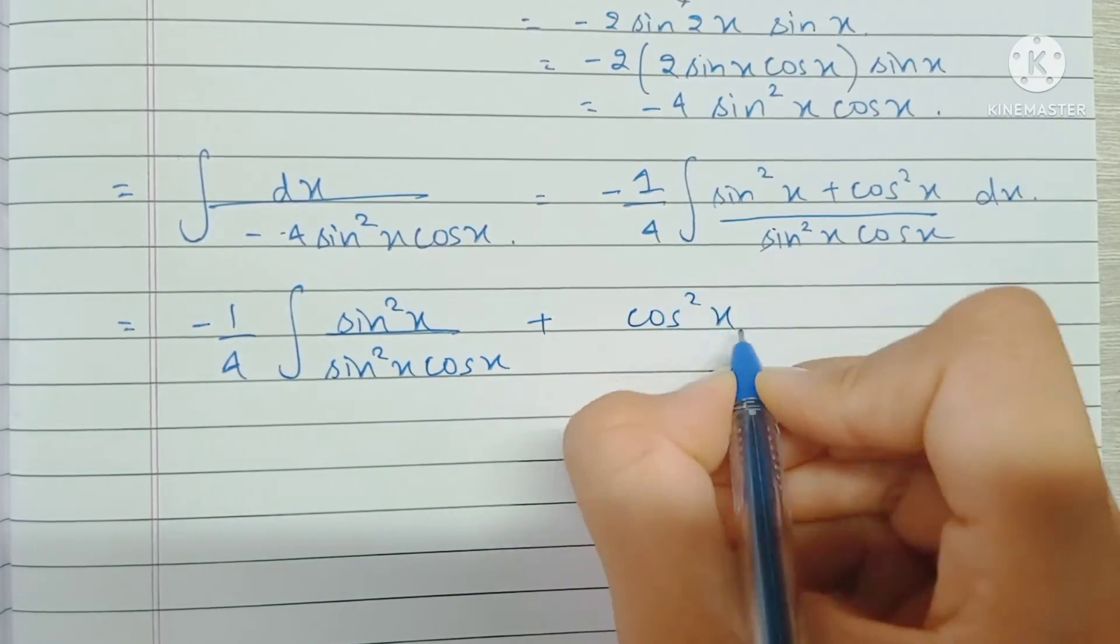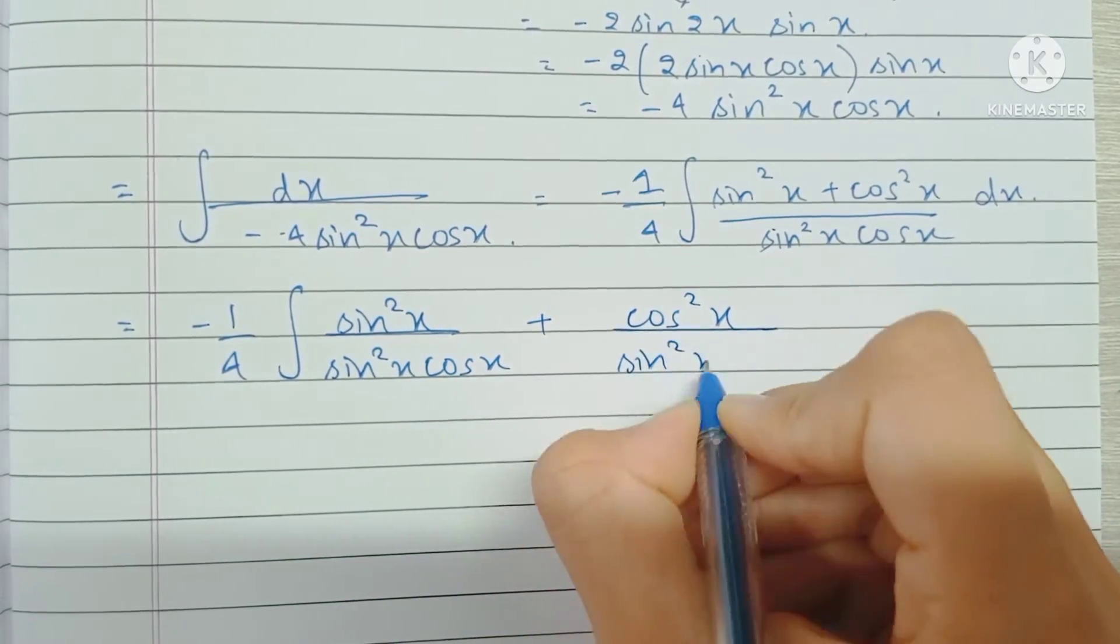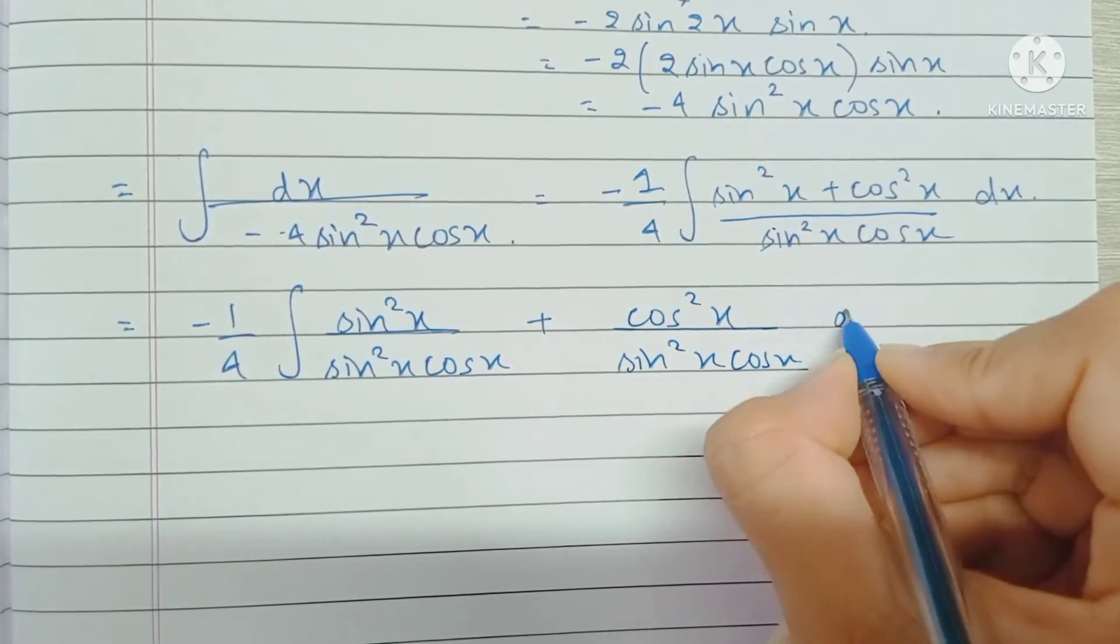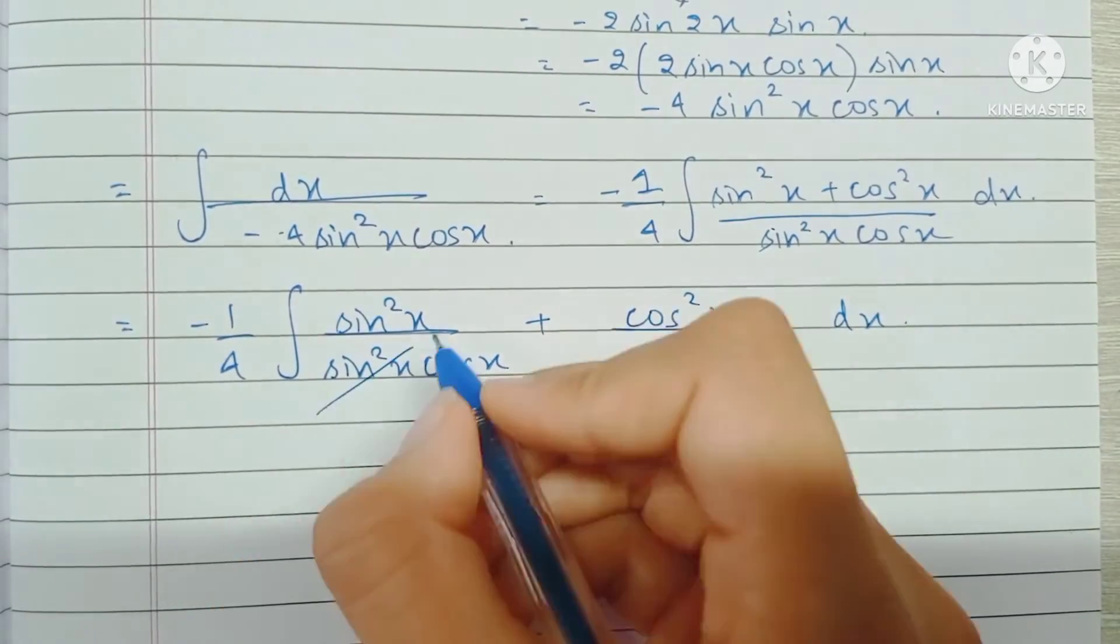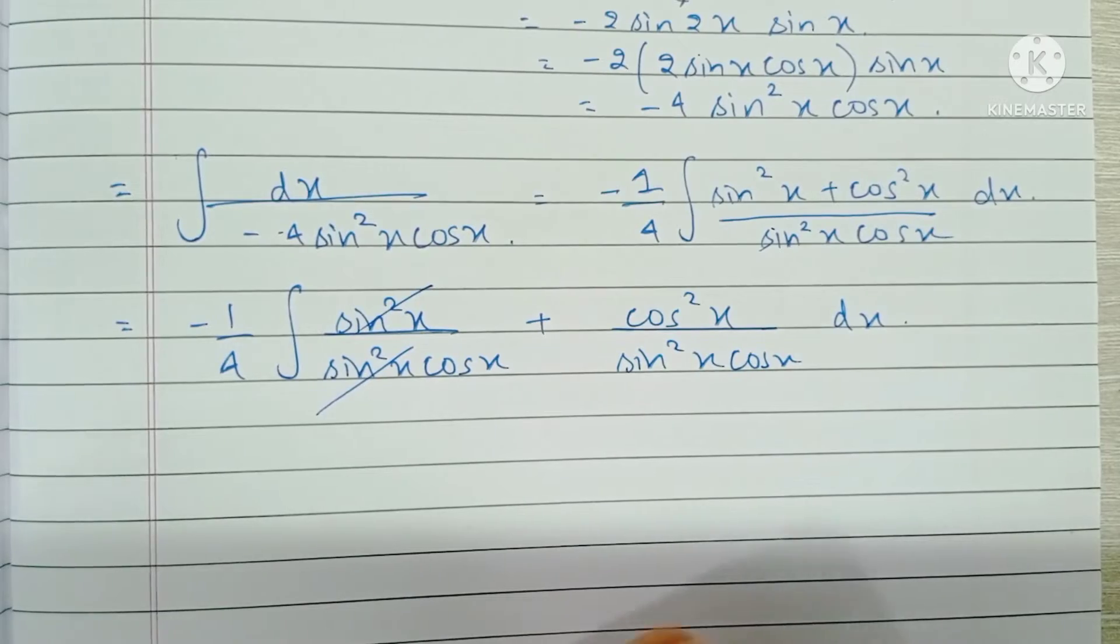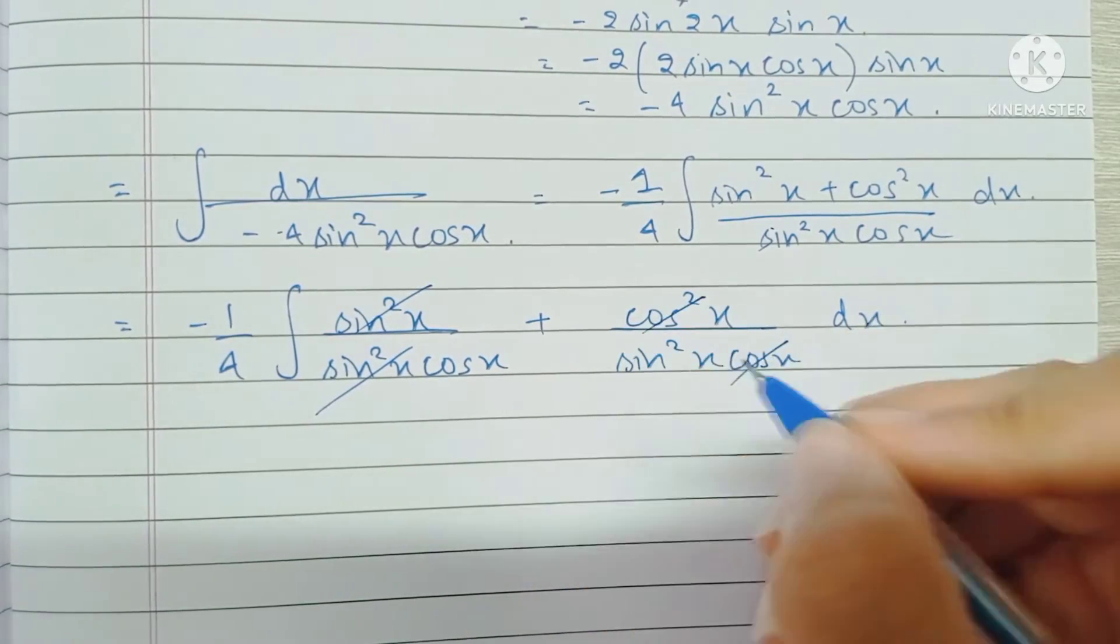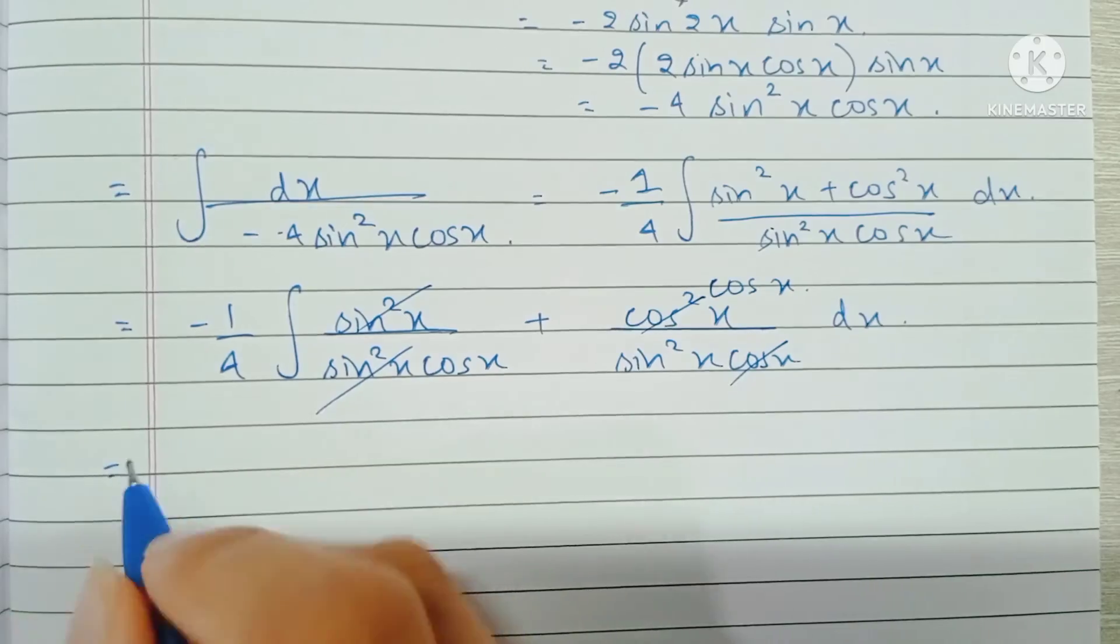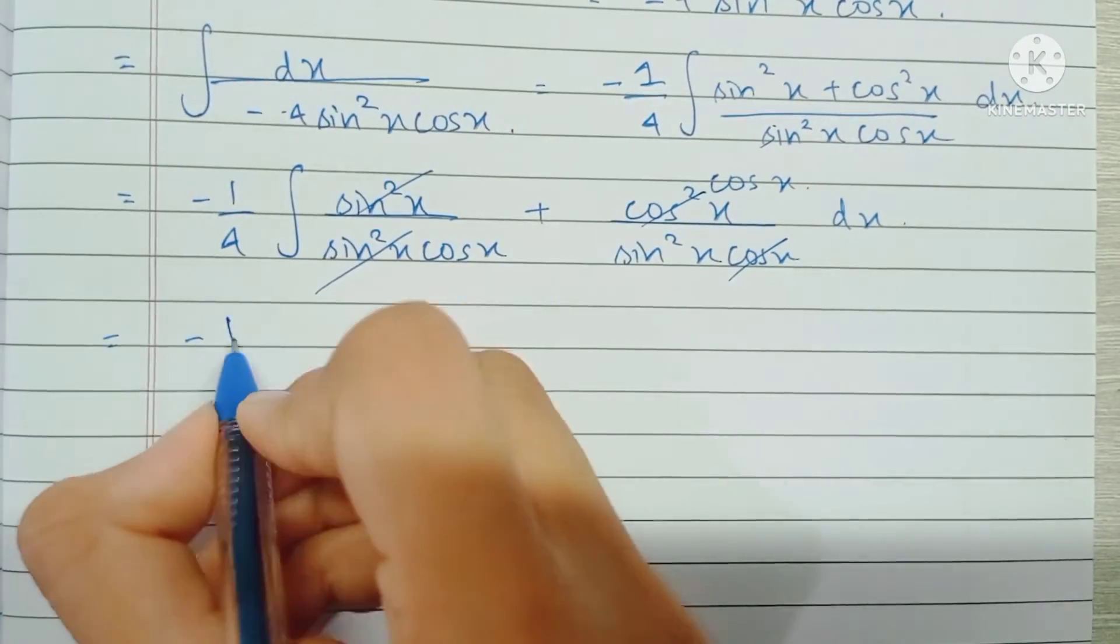In the first fraction, I can cancel out sine squared x. In the second fraction, I can cancel out one of the cos x. So I'm left with minus 1 by 4 the integral of 1 by cos x.